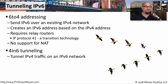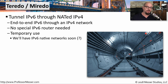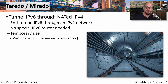Another type of tunneling is 4-in-6 tunneling, where we might have an existing IPv6 network and we would tunnel IPv4 inside of it to be able to bridge the gap between different IPv4 networks. One way that many people are starting to use IPv6 is through a Teredo tunnel. You're able to tunnel IPv6 through a network address translated IPv4. This allows you to use IPv6 end-to-end, and you wouldn't have to do any special configurations on your IPv4 routers. This is designed to be a temporary workaround until IPv6 can be used natively on your network.